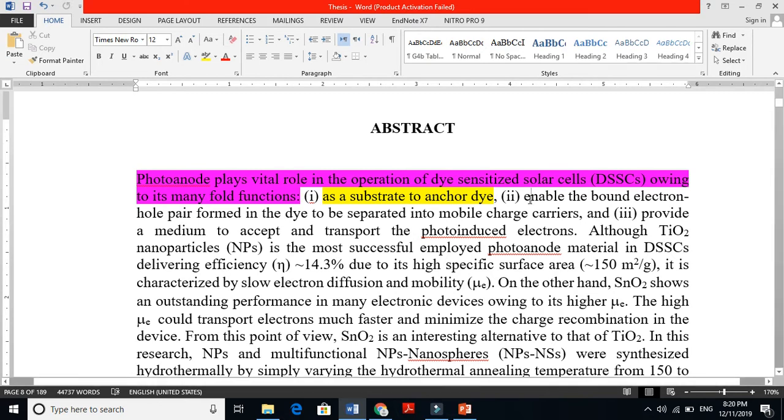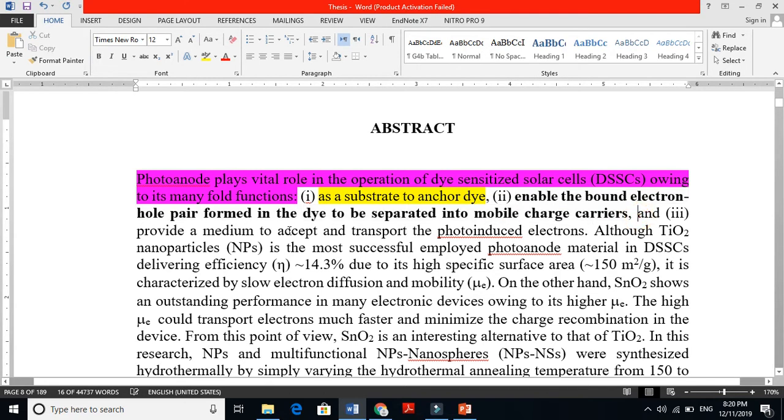The third feature is provide a medium to accept and transport the photoinjected electrons. These two are almost similar but this provides the medium basically. If it was not there, you cannot make the electron-hole separated. I am also bringing my problem statement here in the abstract. I am telling the people why I started doing this work.